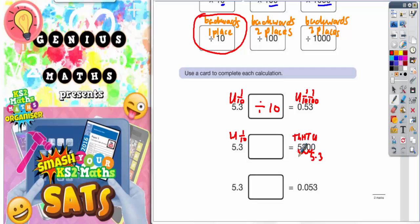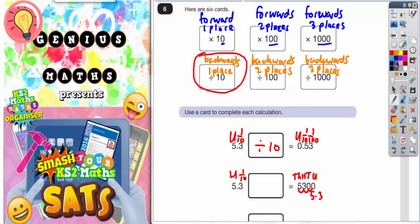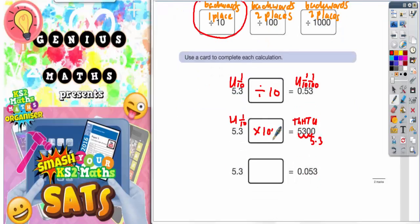It's gone three places forwards. So if we scroll back up here, three places forwards is this one, which is times one thousand. This answer is times one thousand.